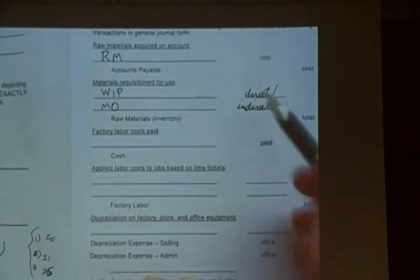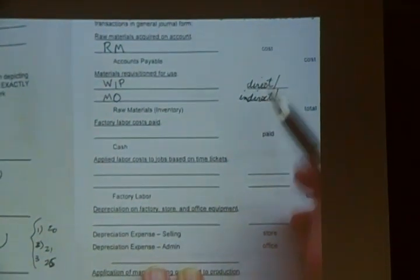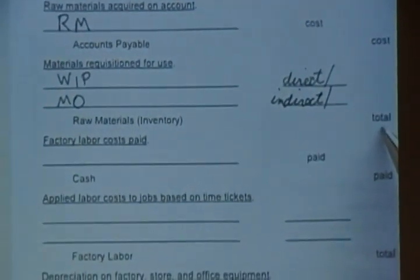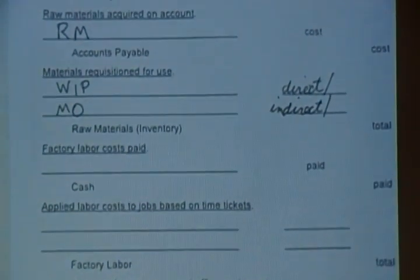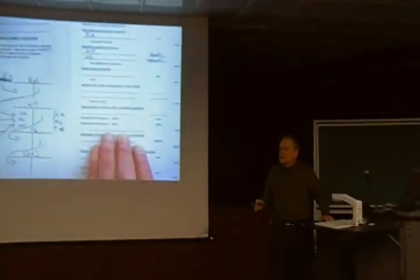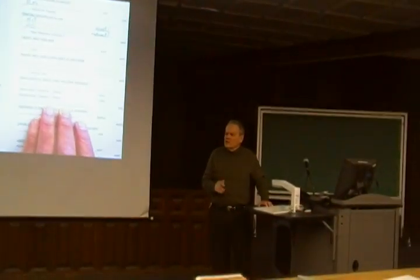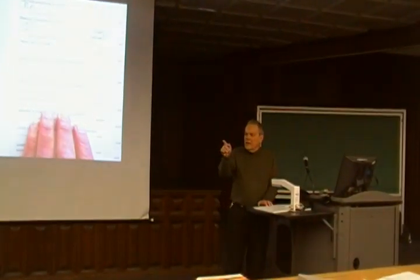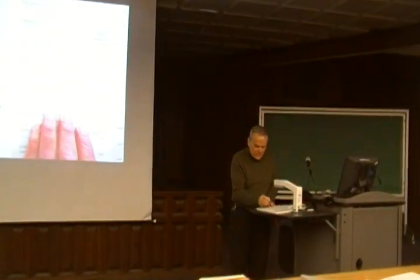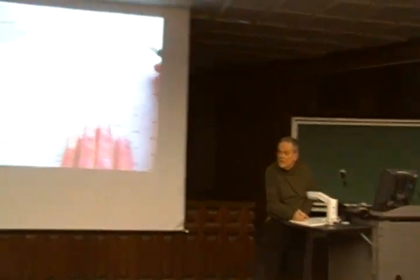If you debit work in process with direct and manufacturing overhead with indirect, this sum is going to equal this total — debits and credits have to equal. Now let's play a whole new word game about this journey. Debit work in process — how much? The actual amount. Debit manufacturing overhead — how much? It's actual.